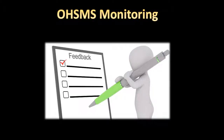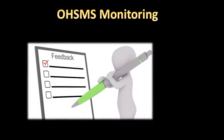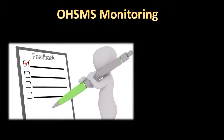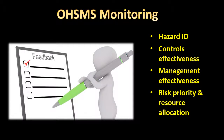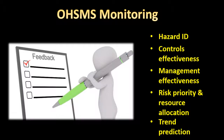To control something, you must be able to monitor it, and OHS management systems are no different. Feedback about the system's effectiveness is integral in the OHSMS's optimisation. Feedback can come in the form of hazard identification, the effectiveness of control measures, and the effectiveness of the management approach as a whole. Feedback can assist in the prioritisation of risks and the allocation of resources to their mitigation. The data collected can be used to predict trends across time and different locations, enabling predictive measures to be put in place.